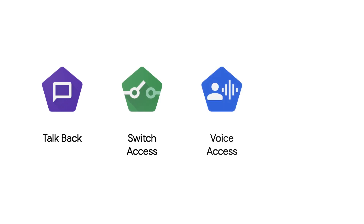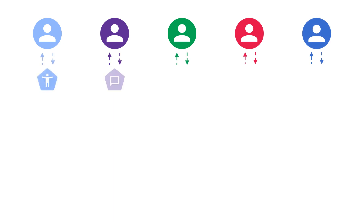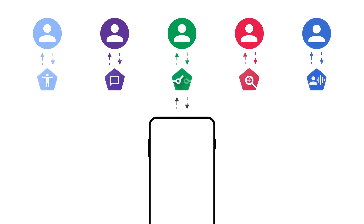There are billions of people who use Android devices, and it is important to remember that not everyone interacts the same way. In Android, there are various accessibility features that help users to interact with the device easily and customize according to their preferences. In this episode, we will discuss how users with different disabilities navigate and interact with custom actions in an app using the accessibility features of Android.